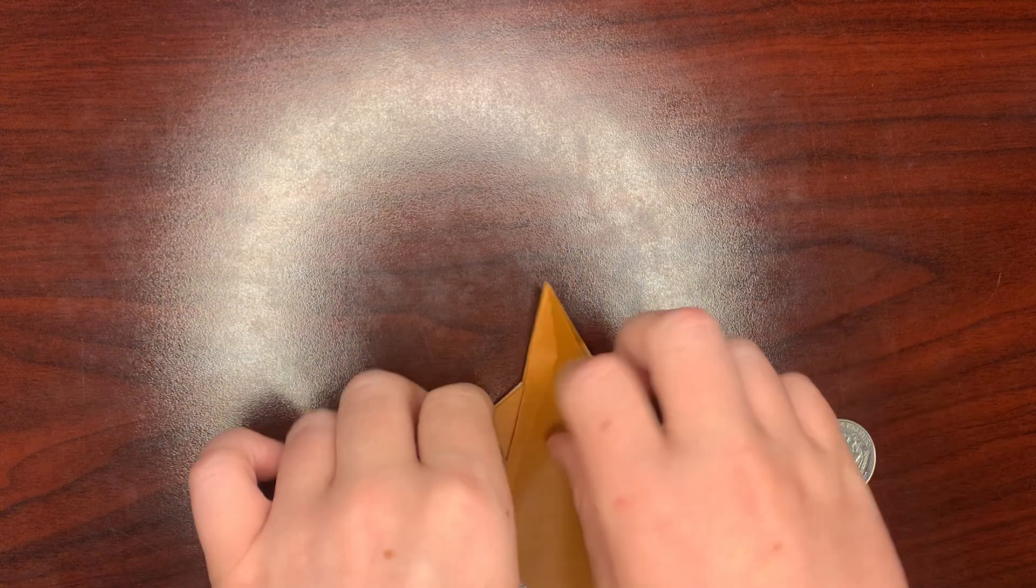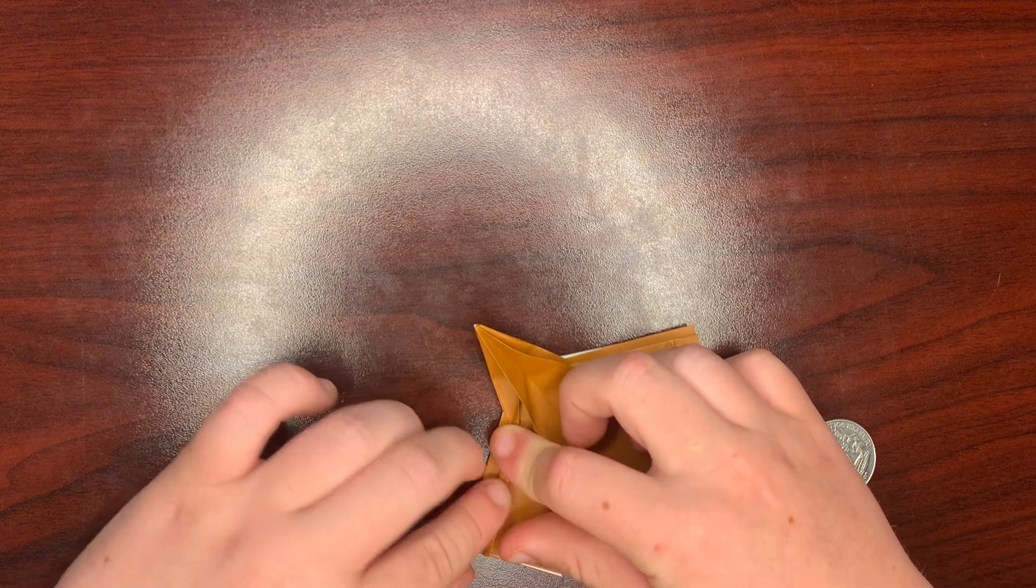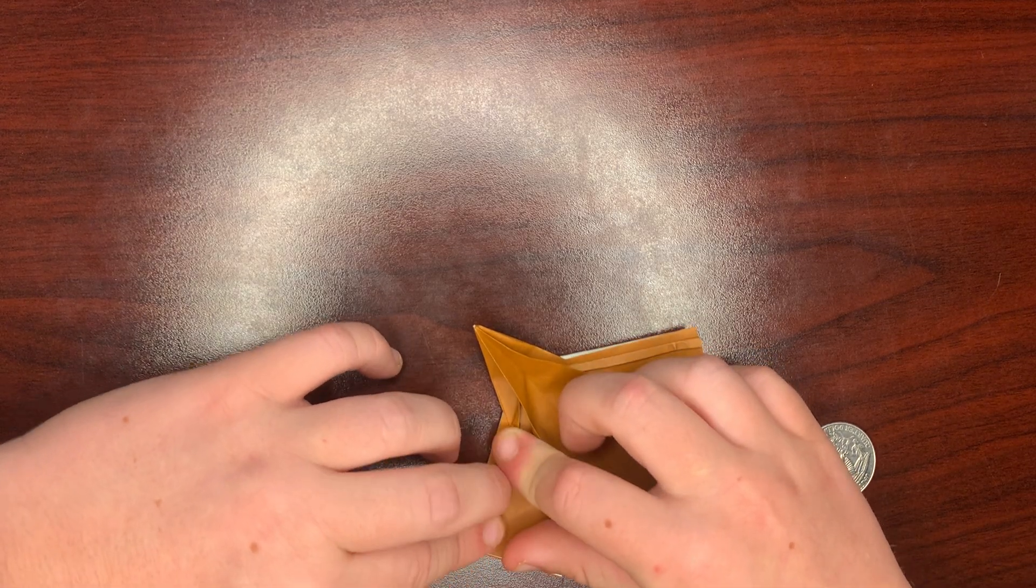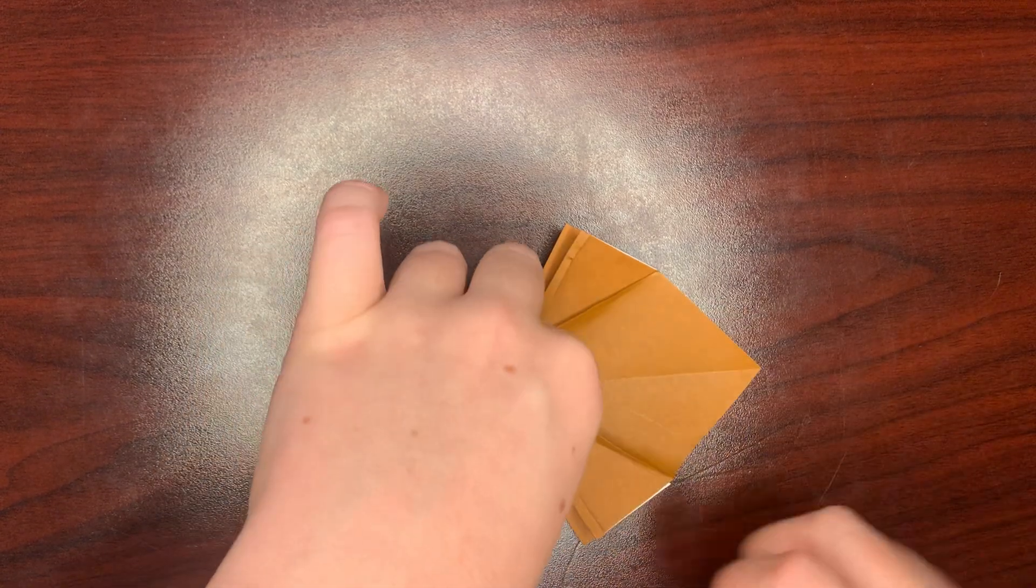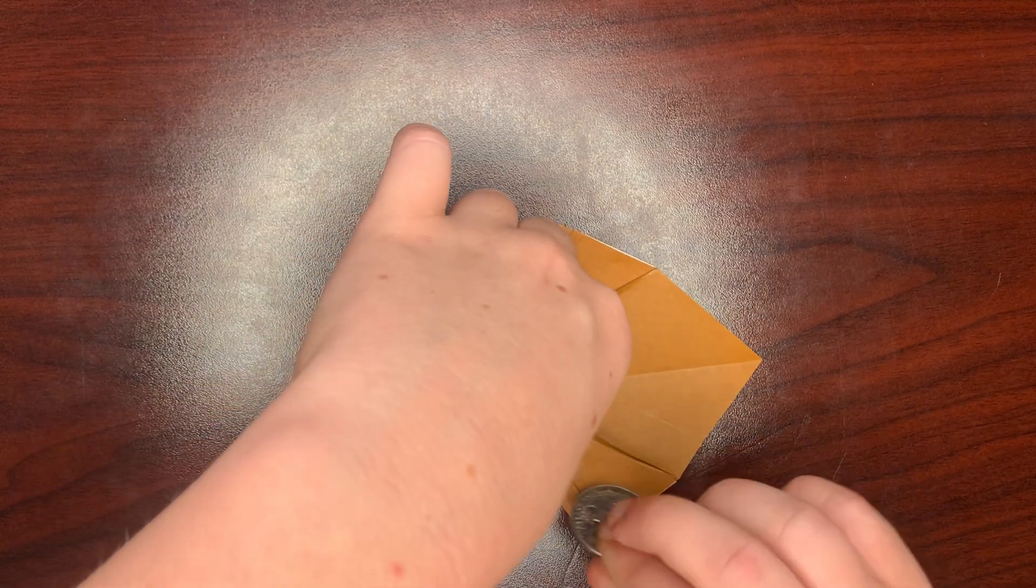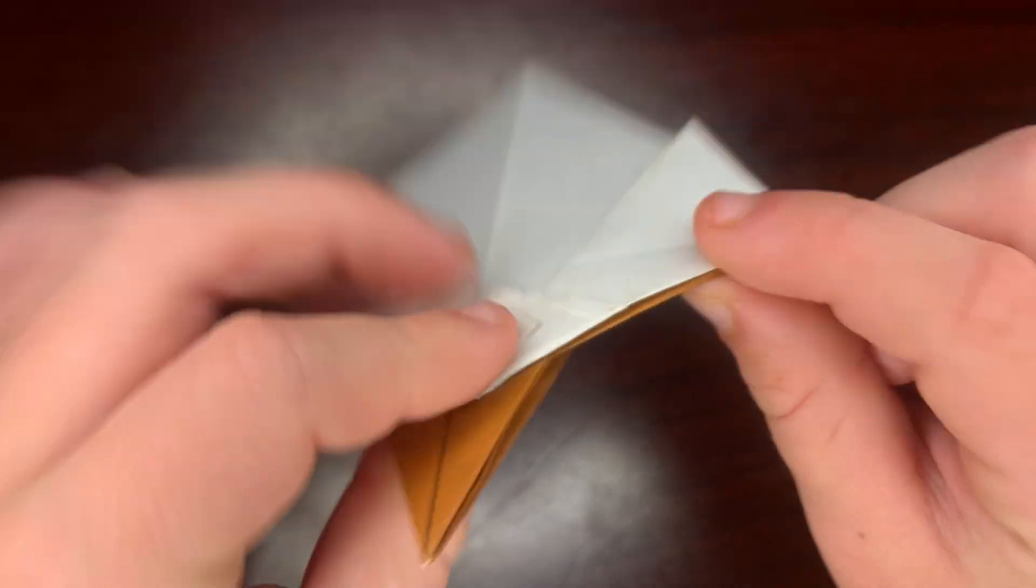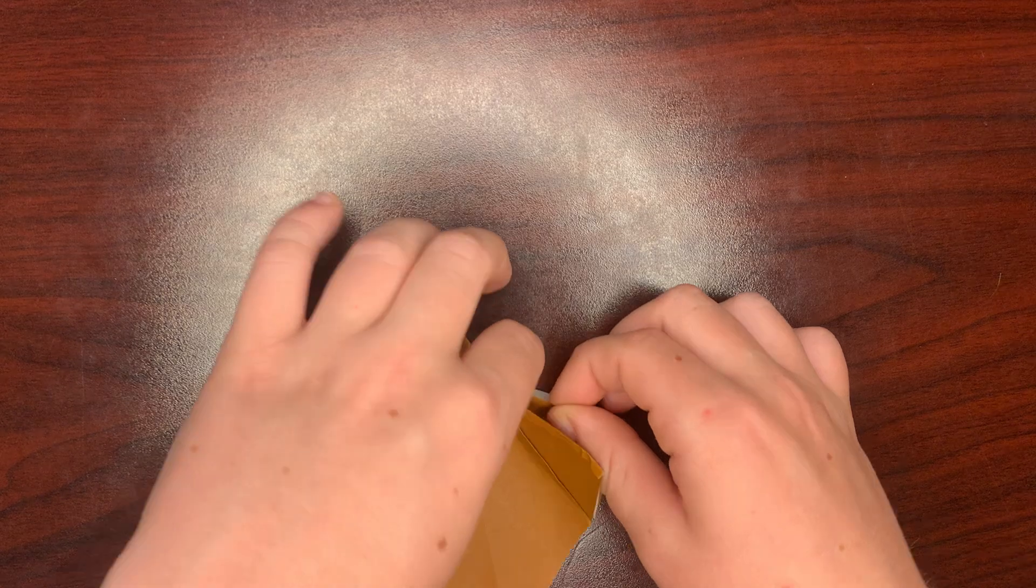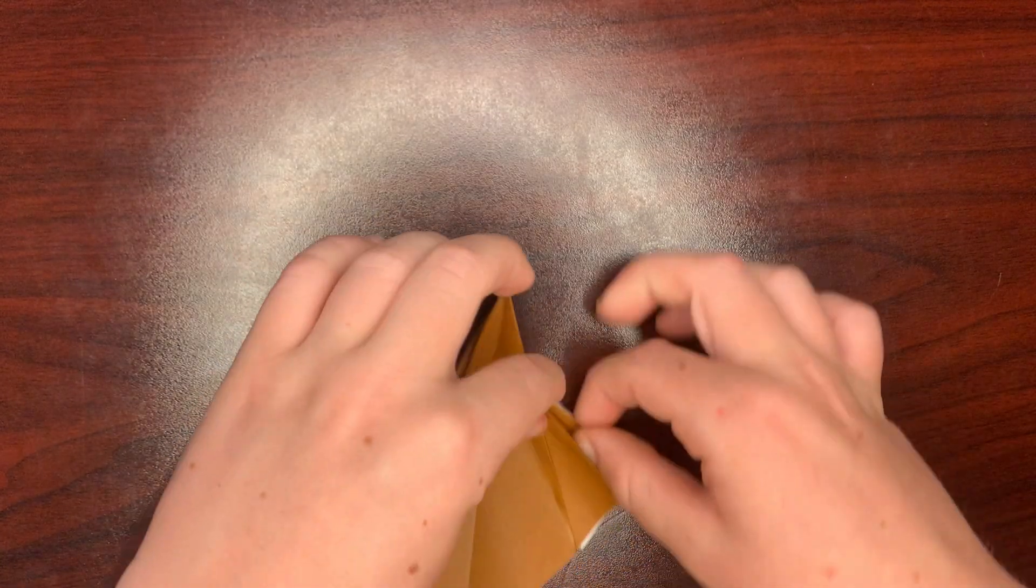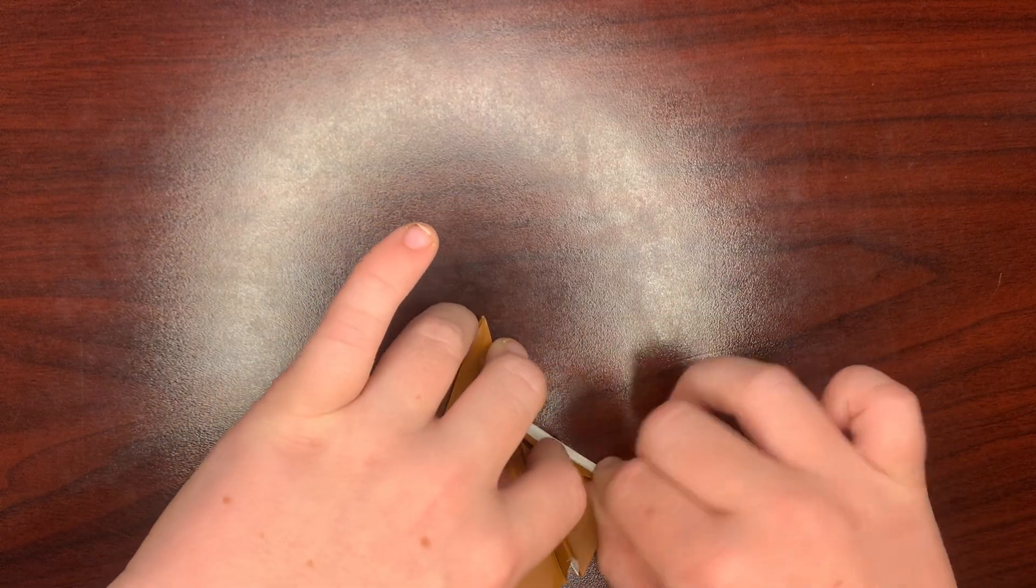Now just do the same thing on your side, just folding this. Once you're done with that, it should look like this. It's not going to be perfectly even with that, just letting you guys know reinforcements are not going to be very even. Just fold this to like the same length you did for the other side.